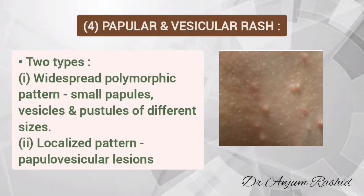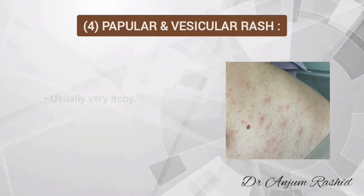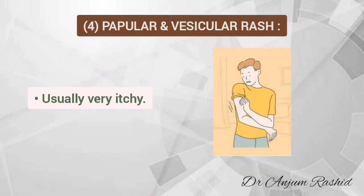Previous history of eczema is not necessary for this rash to develop. The fourth type is papular and vesicular rash. It is of two types: first, a widespread polymorphic pattern characterized by small papules, vesicles, and pustules of different sizes; and second, a localized pattern of papulo-vesicular lesions. This rash may appear similar to heat rash. In some cases the rash may be subtle with only tiny bumps present all over the skin. These rashes are usually very itchy.